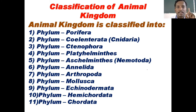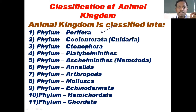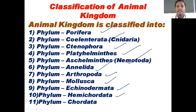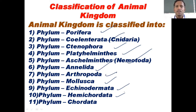Apart from the introductory classes, we studied 10 phyla — total sessions were 12. The first was Porifera, then Coelenterata (also known as Cnidaria), Ctenophora, Platyhelminthes, Aschelminthes, Annelida, Arthropoda (the largest phylum), Mollusca (the second largest), Echinodermata, and finally Hemichordata — the last phylum of non-chordates. I also mentioned that Hemichordata was once placed under Chordata but is now studied under non-chordates.